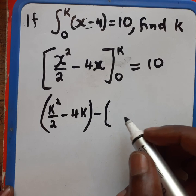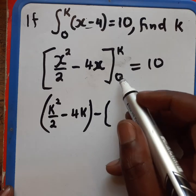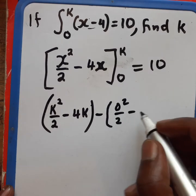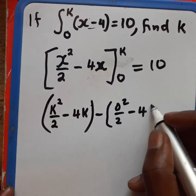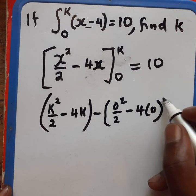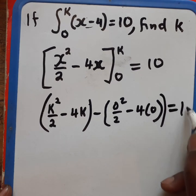We can do the process. While we have an x, we are going to put the 0 now. So it will be 0 squared over 2 minus 4 multiplied by 0. This must be equated to 10.